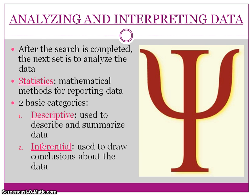We've done the research and now we are going to analyze and interpret our data. Once the research is complete, what we have is a bunch of numbers that really don't mean anything — these are called data. We need to use a mathematical method called statistics to get meaning out of the numbers. There are two basic categories of statistics: descriptive statistics, which are used to describe and summarize the data, and inferential statistics, which are used to draw conclusions and support our hypothesis.